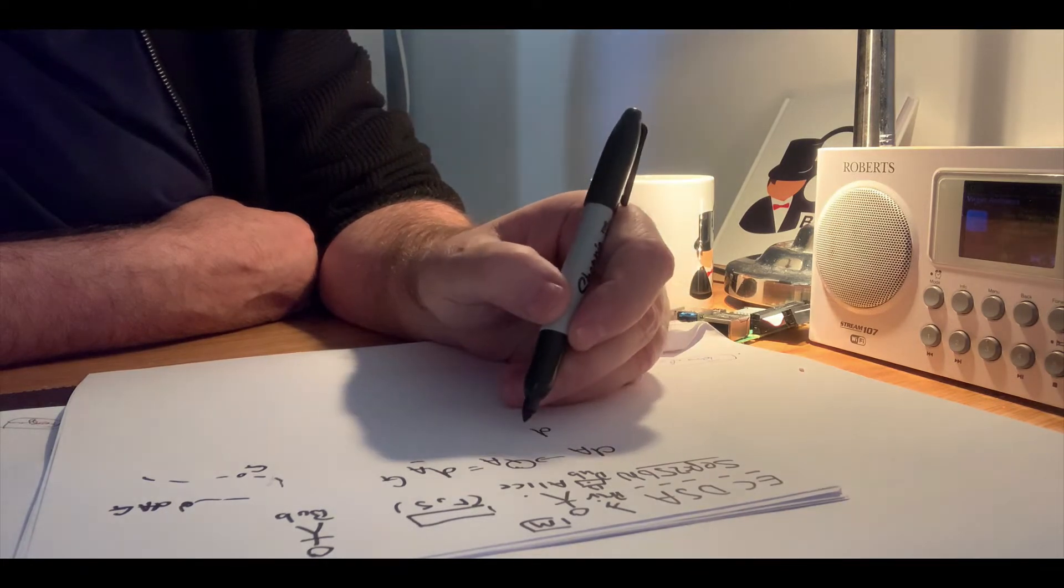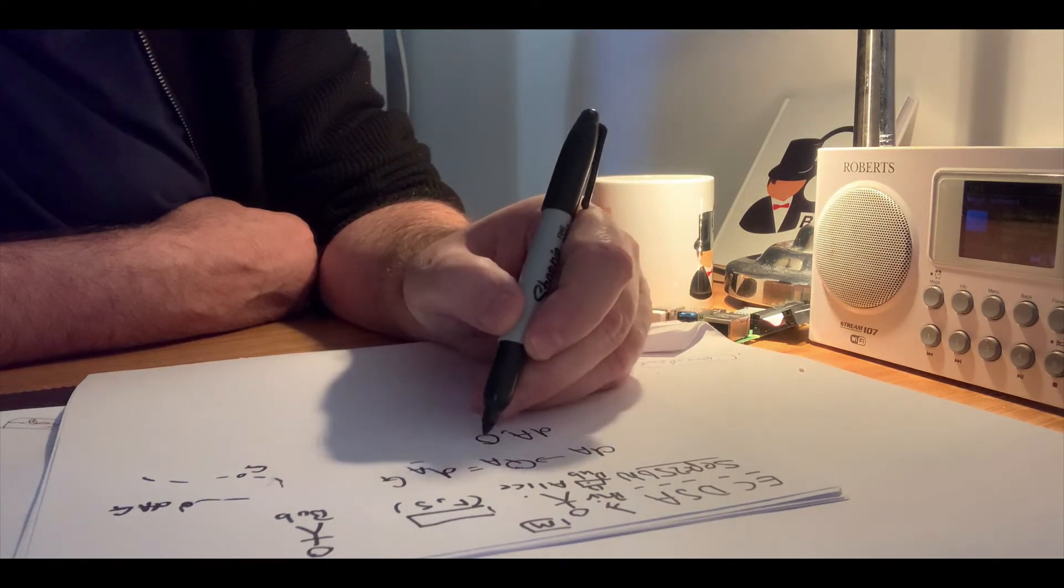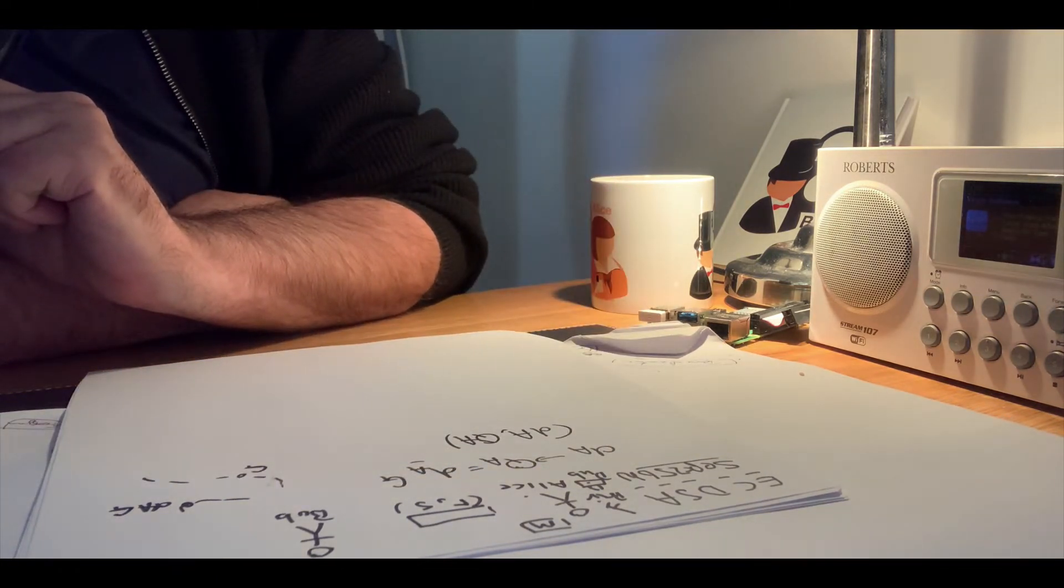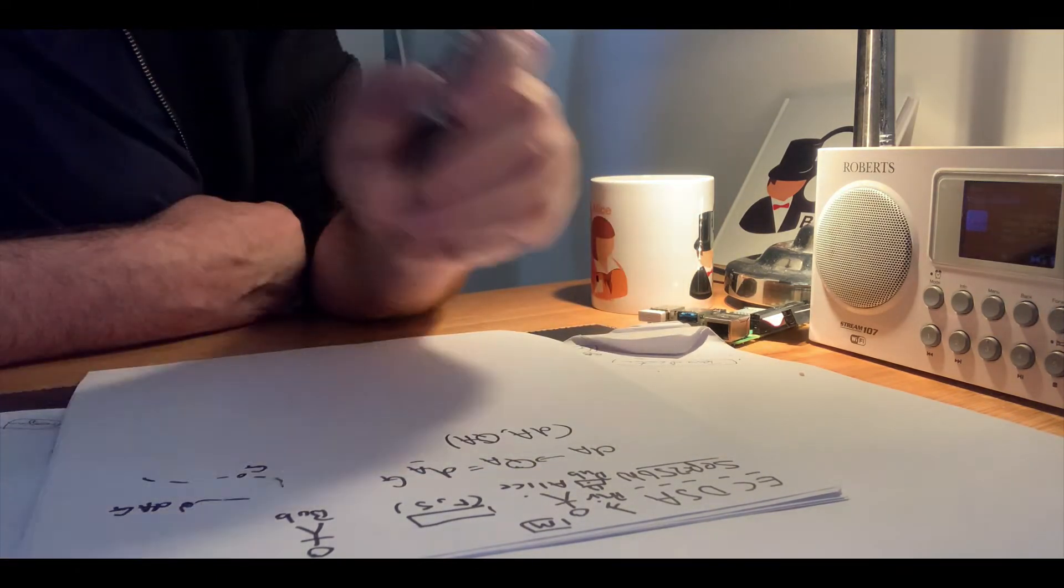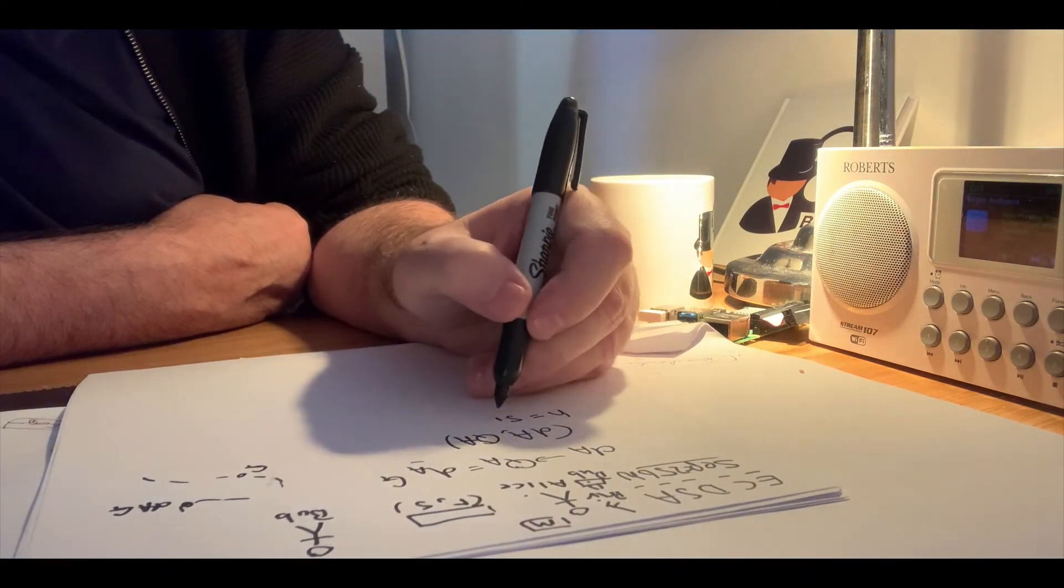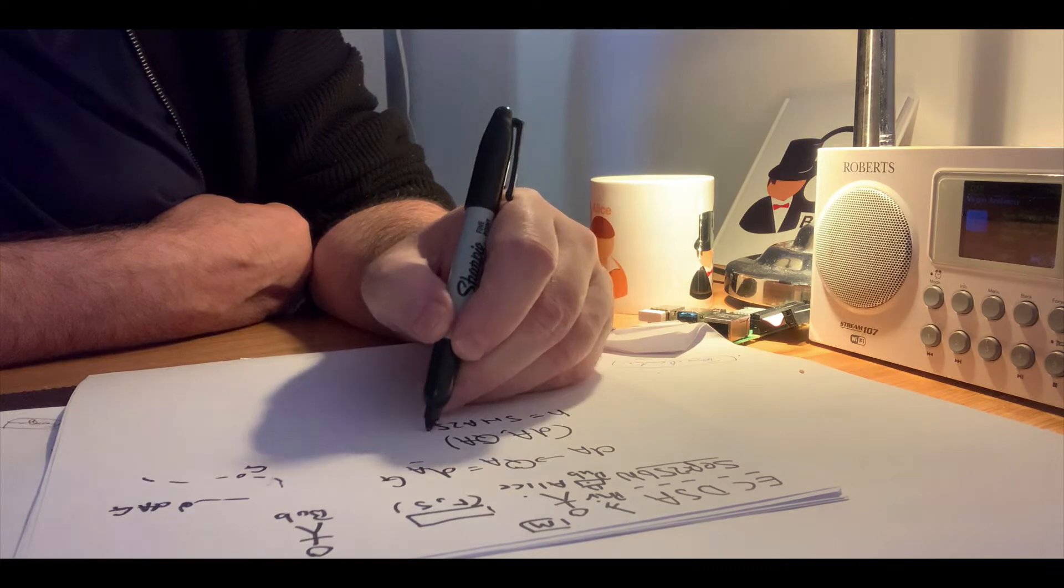Okay, so this is the starting point. We have da and Qa as Alice's key pair. First, Alice will take the message and then create a SHA-256 of the message.